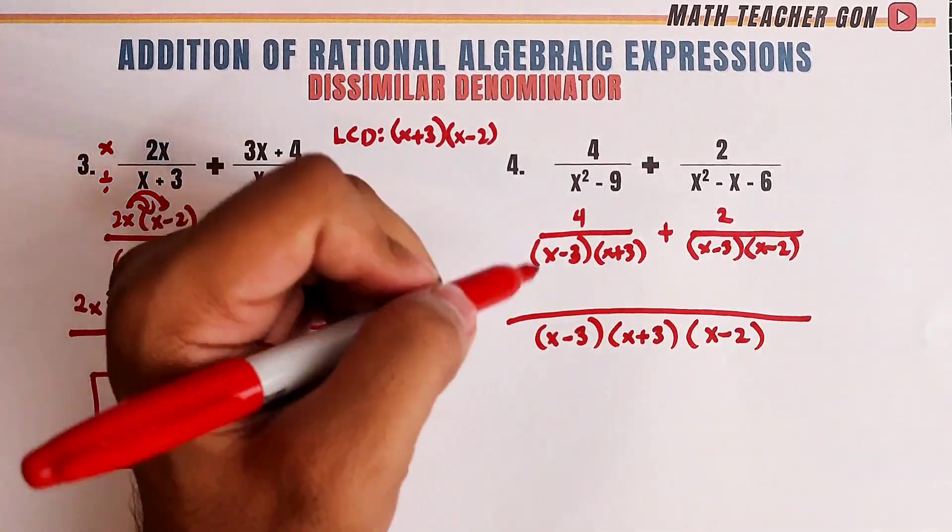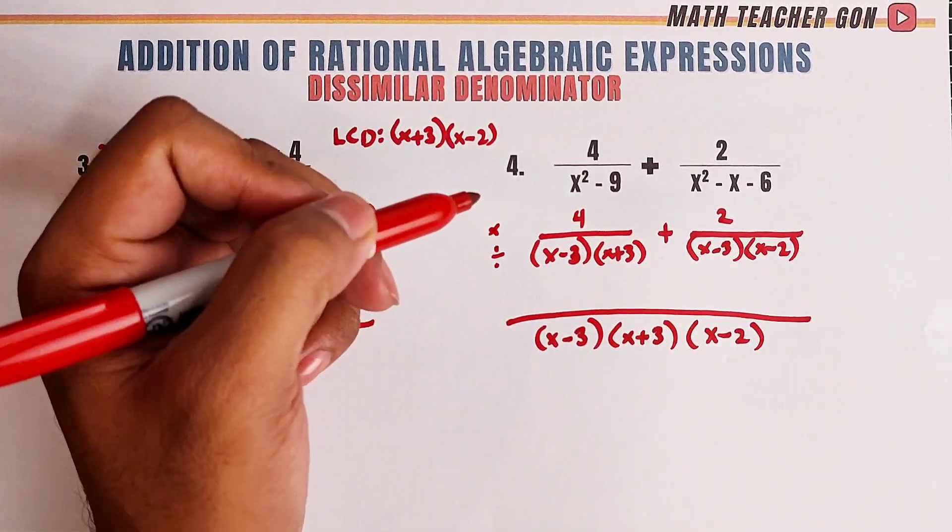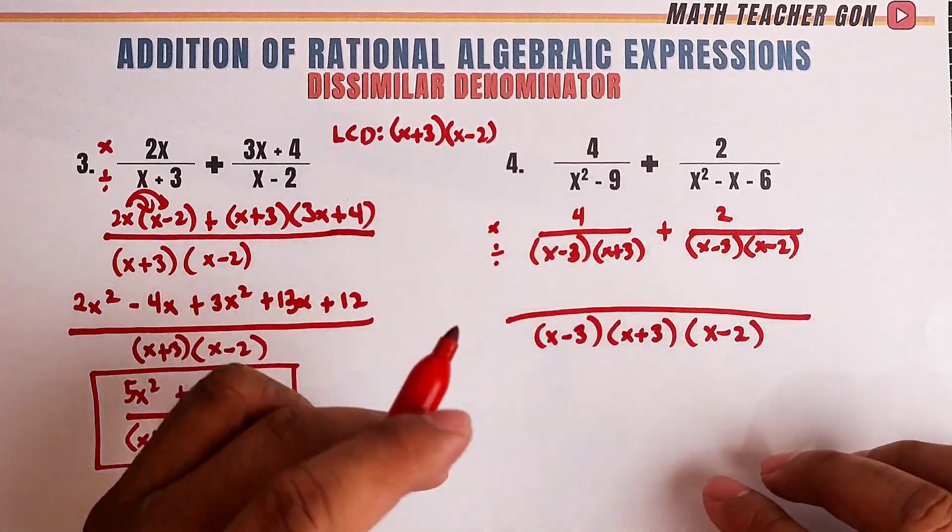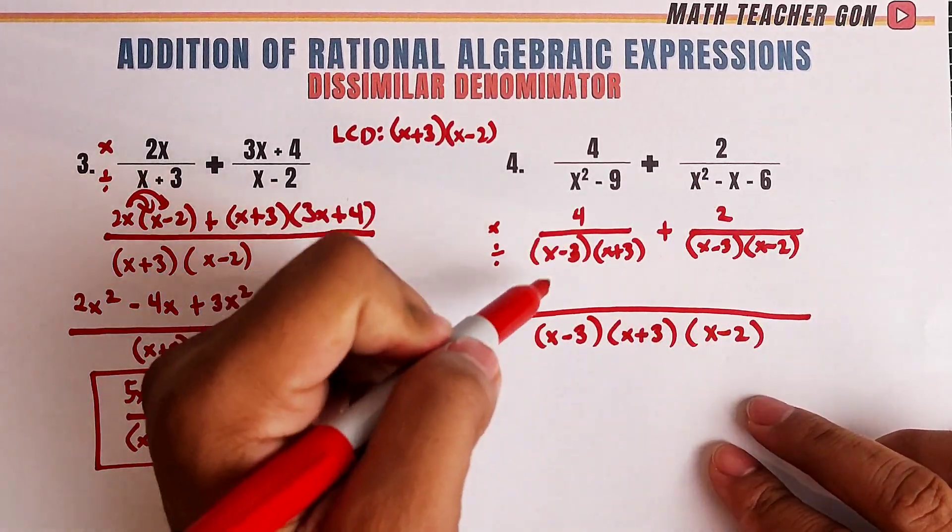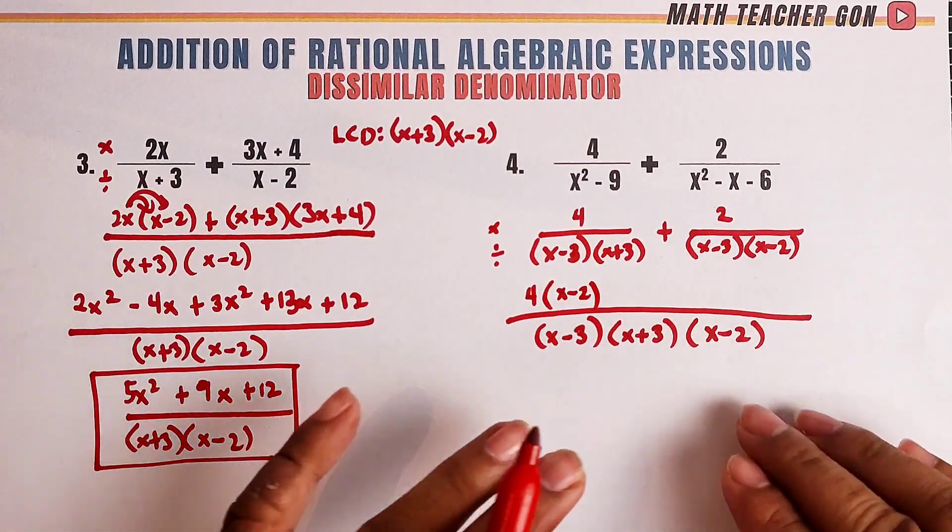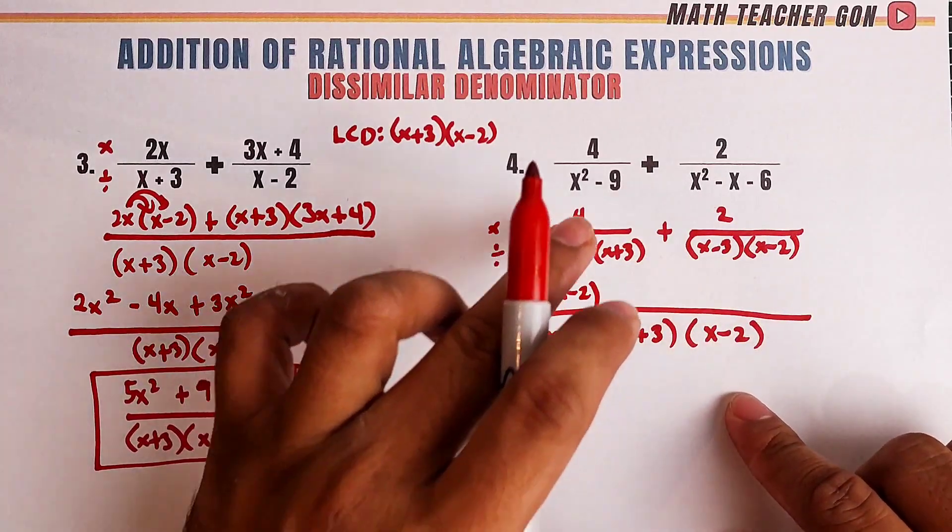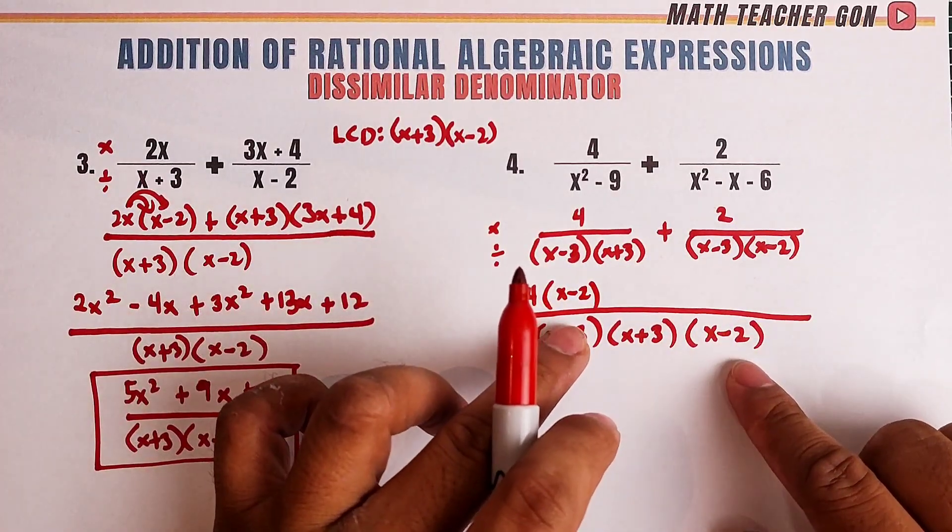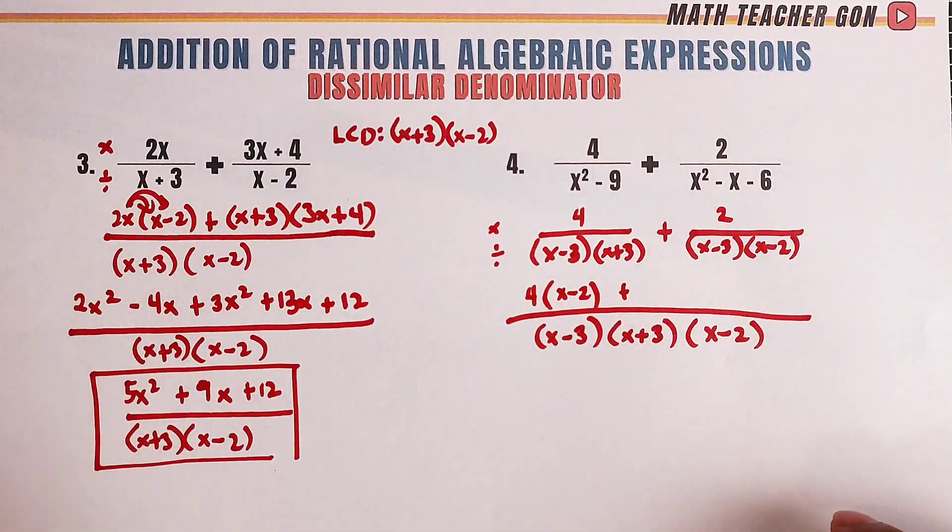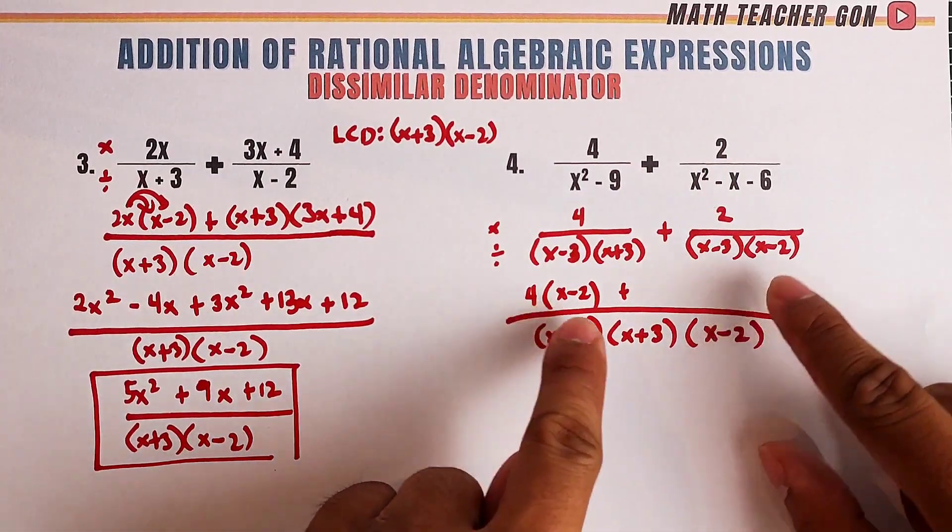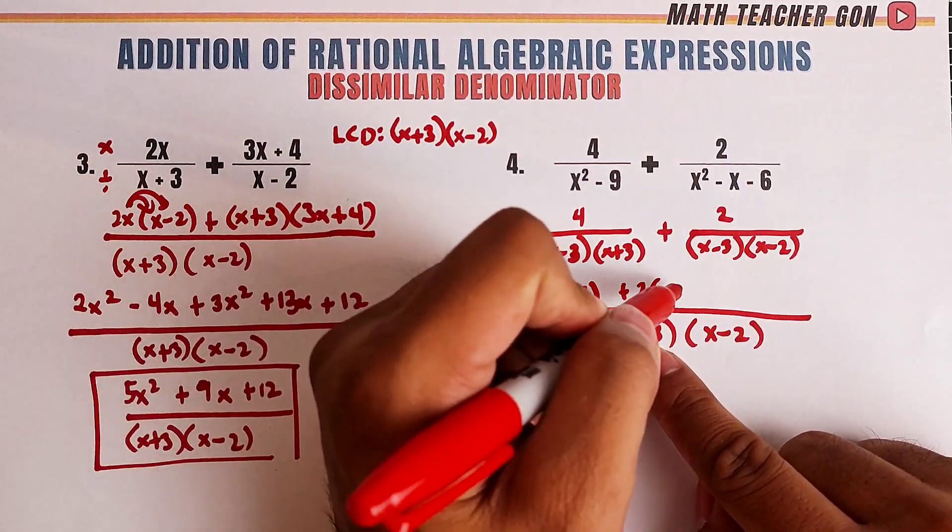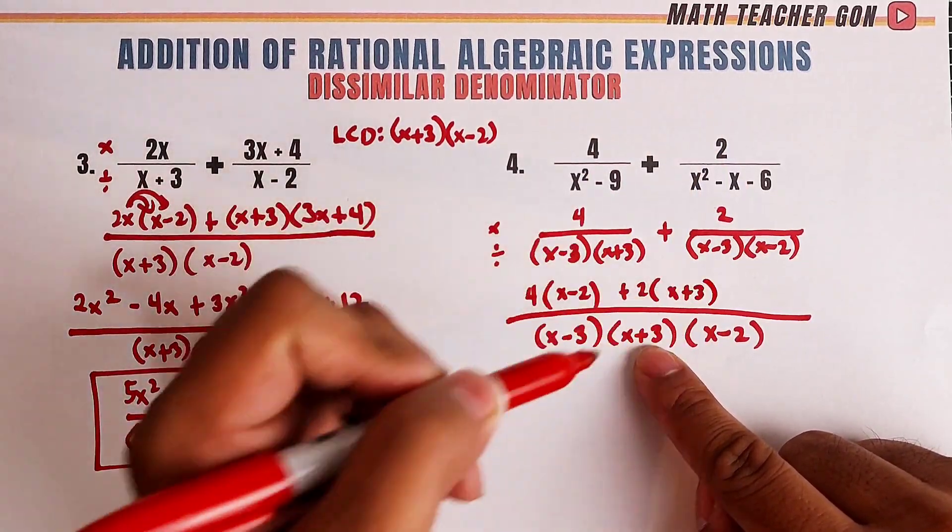Now, let's divide. Again, divide, multiply. These 3 factors divided by these 2 factors, what remains is this. So, we have 4 times x minus 2. Because these two will cancel. That's why we have 4 times x minus 2 plus for this one, this one to this one, these two will cancel because they are the same. So, we have 2 times x plus 3.